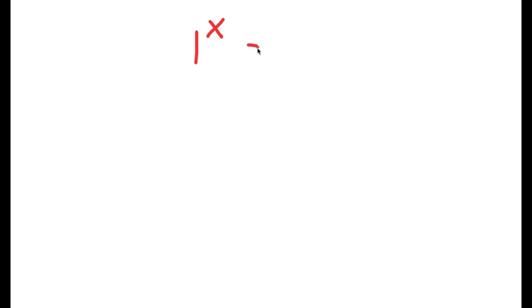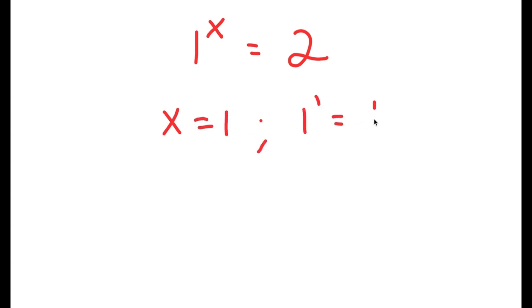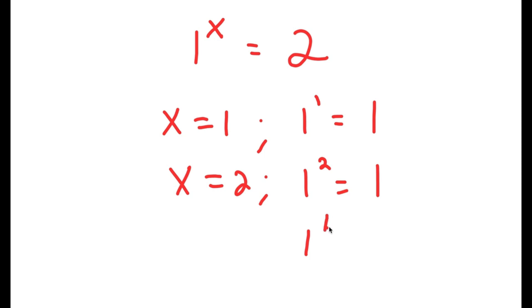In this video, I'm going to solve the equation 1 to the power of x is equal to 2. Before we even start solving this, if x is equal to 1, then I have 1 to the power of 1, which is equal to 1. And if x is equal to 2, then 1 to the power of 2 is also equal to 1. You can even go 1 to the power of 10, which is still equal to 1. So what possible value of x can make 1 to the power of x equal to 2?